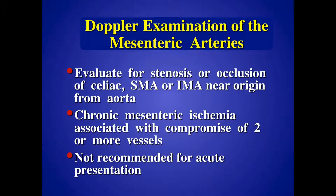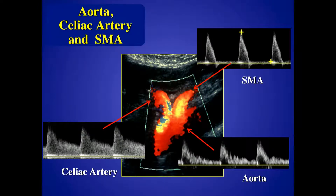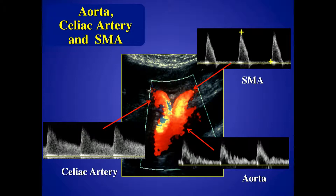You need to see involvement in at least two of the three vessels to call it chronic mesenteric ischemia. Our protocol starts with the abdominal aorta — look for evidence of aneurysm, look for plaque — then take samples from the celiac, SMA, and IMA. The aorta is going to be relatively low resistance at the origin of the celiac because it's supplying blood flow to the liver and spleen. The celiac will also have a low resistance flow pattern, but the SMA is going to be very high resistance in the fasting state.